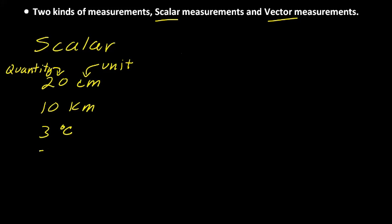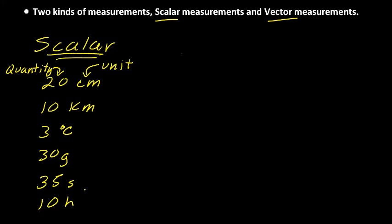How about 30 grams? It has a quantity — 30 — and it has a unit of measurement, the gram. So, what makes a scalar measurement a scalar measurement? All scalar measurements include both a quantity and a unit of measurement. 35 seconds, 10 hours — those are scalar measurements. They always have a quantity and a unit.